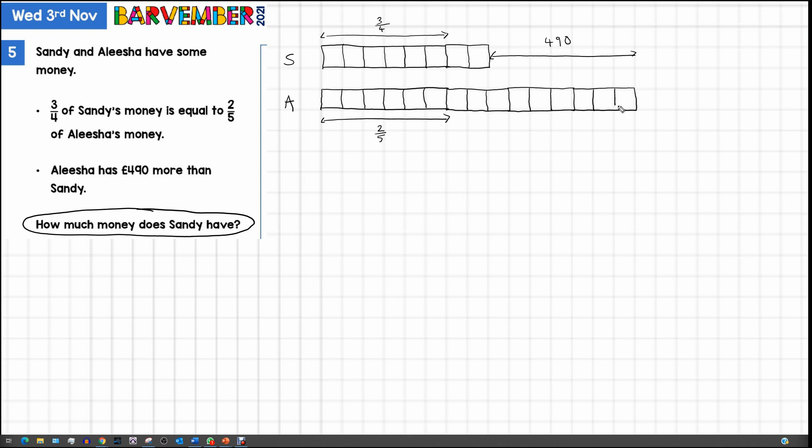We always like to have blocks that are all the same size because then we can find out what one of them is worth. So now we have that £490 is equal to 1, 2, 3, 4, 5, 6, 7 blocks.